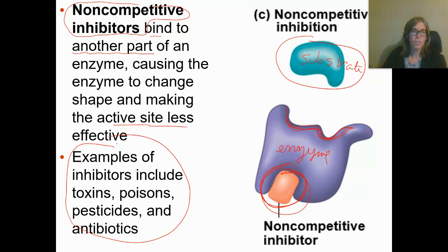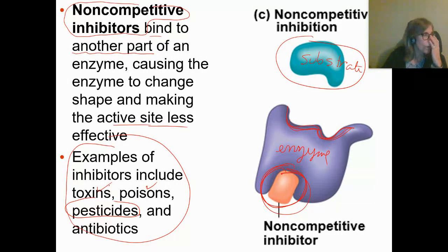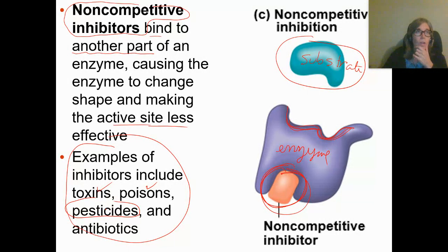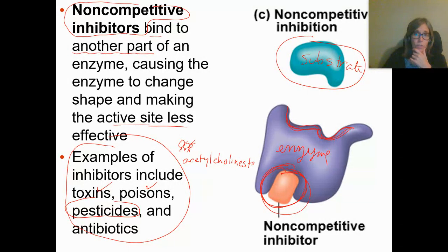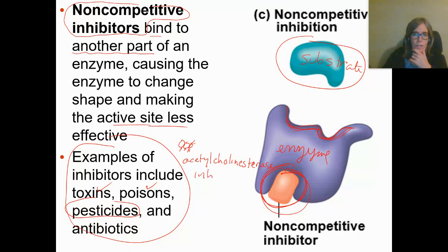Some examples: aside from poisons and toxins, inhibitors can also be found in pesticides. For example, a type of ant poison is an acetylcholinesterase inhibitor. Big words! Let's look at what that means.